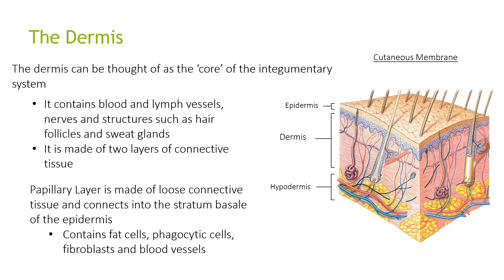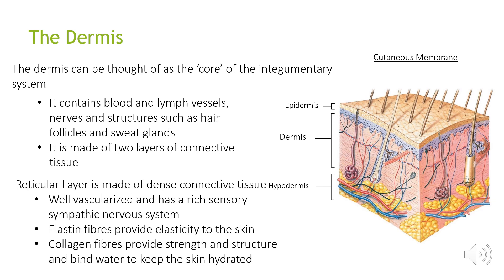Looking at the dermis: the dermis can be considered the core of the integumentary system. It possesses blood and lymph vessels, nerves, and structures such as hair follicles and sweat glands, and is made of two layers of connective tissue. The papillary layer is made of loose connective tissue that connects into the stratum of the epidermis and contains fat cells, phagocytic cells, fibroblasts and blood vessels.